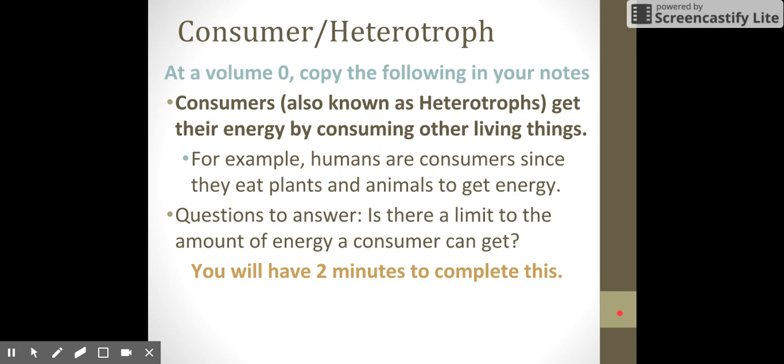Now, producers produce energy that then get consumed by the consumers, also known as heterotrophs. So consumers, known as heterotrophs, get their energy by consuming other living things. For example, humans are consumers since we eat plants and animals to get our energy. We can choose to eat plants or animals, but we can't photosynthesize, which makes us a consumer or a heterotroph.